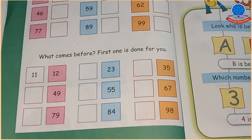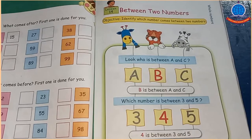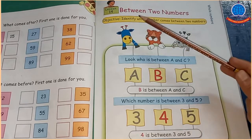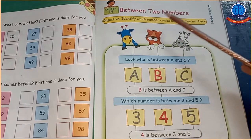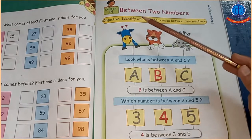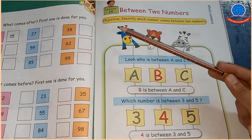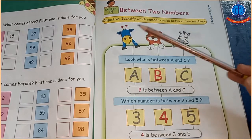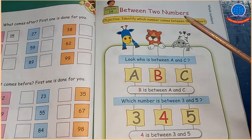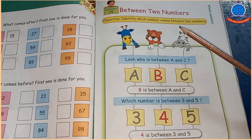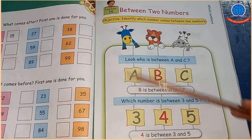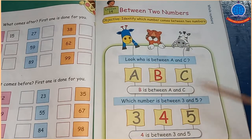अब आते हैं page number 57 पर, Lesson 14: Between two numbers. दो numbers के दर्मियान के लिए between का word यूज़ करते हैं। Objective: identify which number comes between two numbers — अब हमने उन numbers को identify करना है जो दो numbers के दर्मियान में आती हैं।